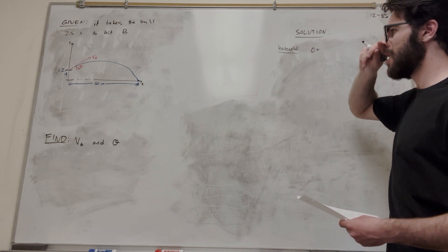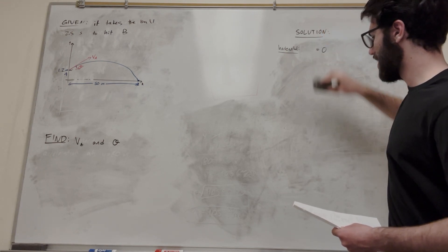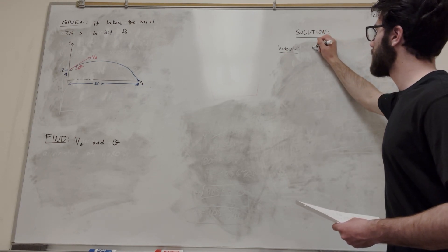So x-initial is 0. Actually, no, x-final is not that. x-final is 50, right? We travel 50 meters, so x-final is 50.